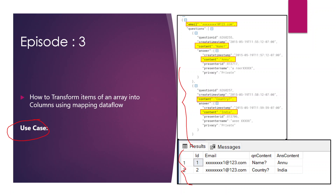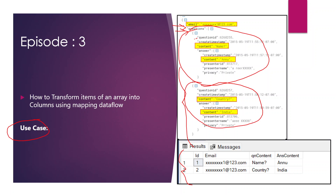In the input JSON there is a property called email with some value. Then there is a property called question, which is an array, and inside the array there are two items. Each item has a separate question ID, a question content value, and inside the first item there is an answer value which also has some content. We need to transform these properties inside each item of the array into separate columns in our SQL table.